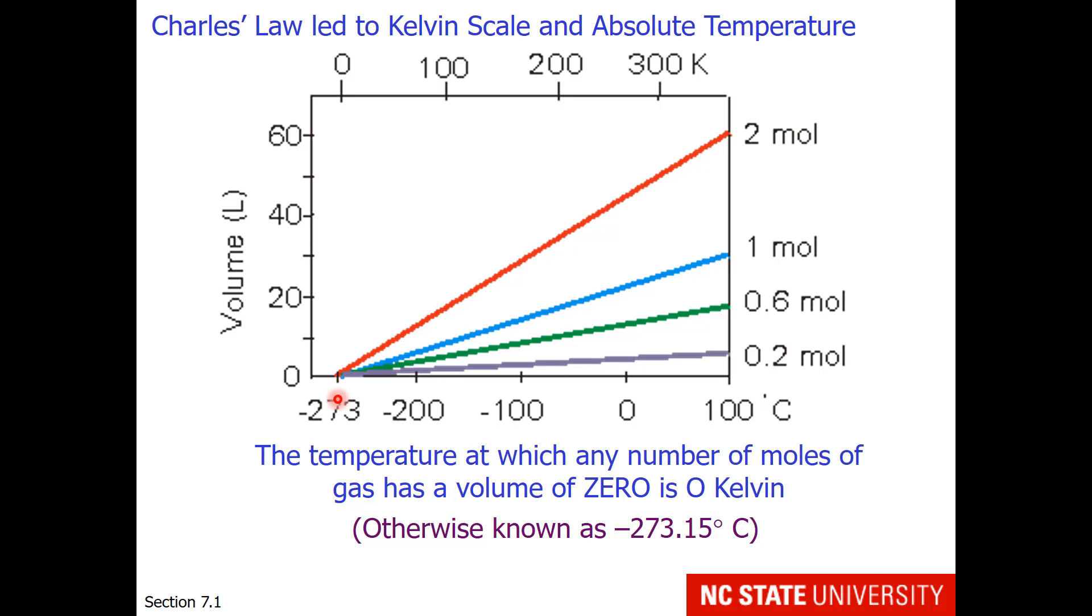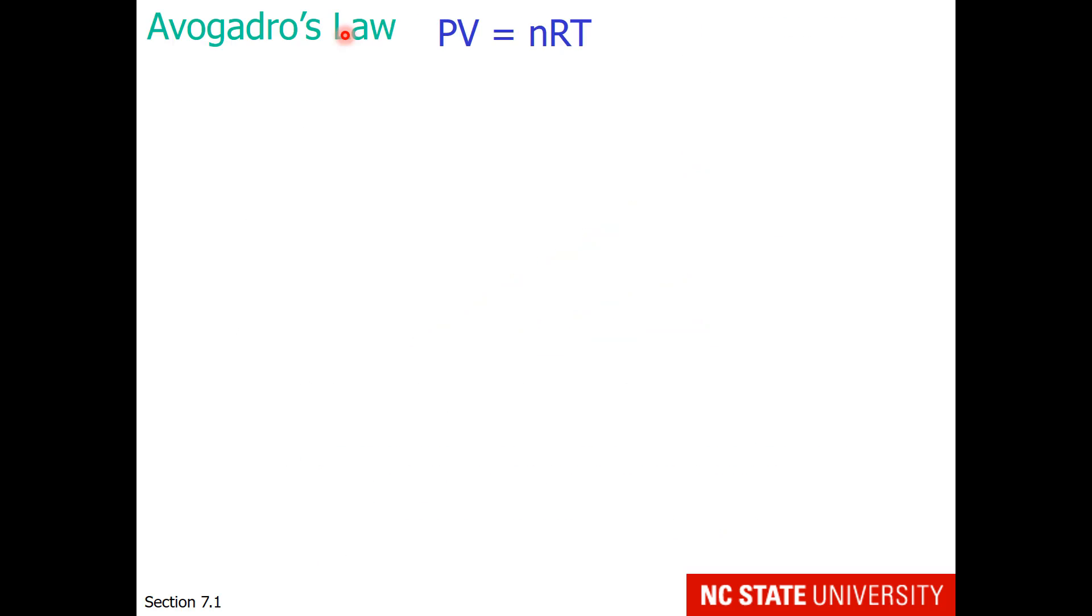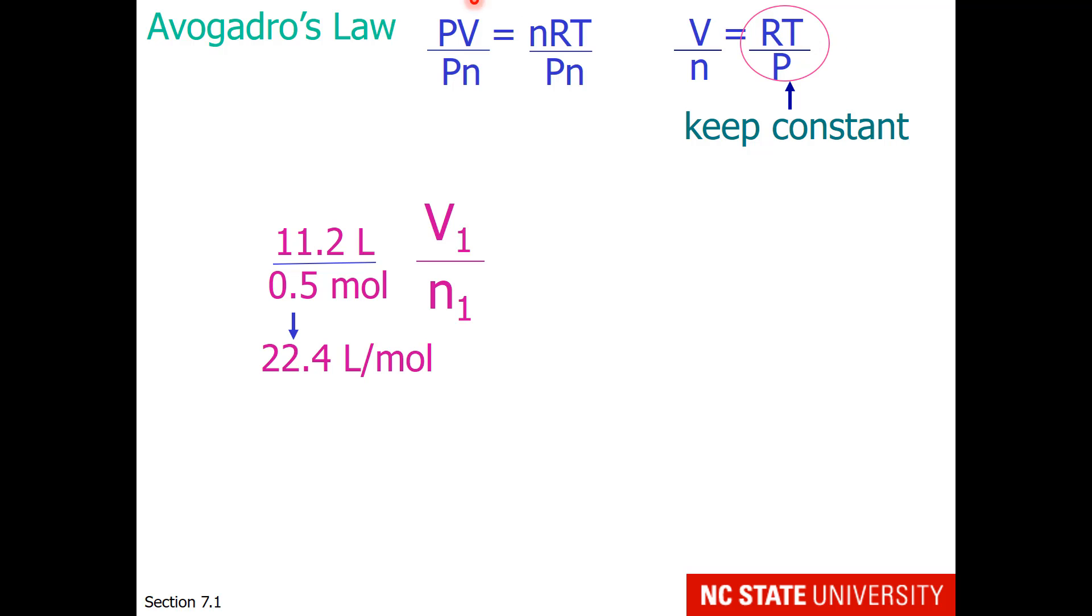The next law is Avogadro's law. So once again I'll rearrange this equation and divide by pressure and moles of gas, so that I get volume divided by moles of gas on one side, and I'll keep the other variables constant. So volume divided by moles of gas under one condition, let's choose 11.2 liters and half a mole.